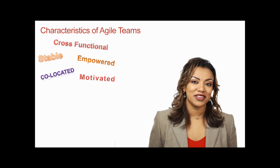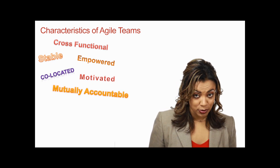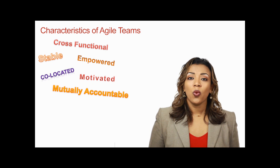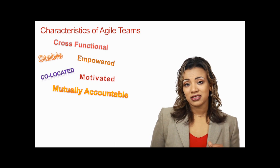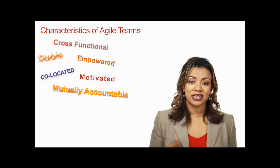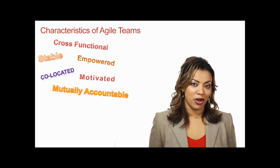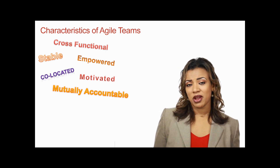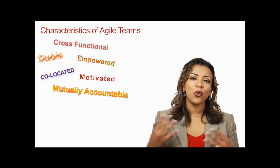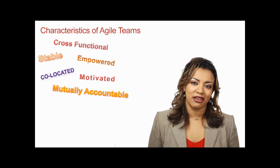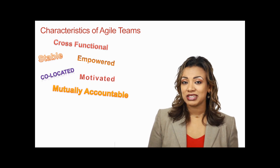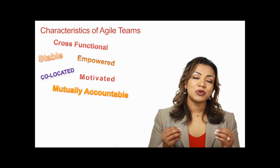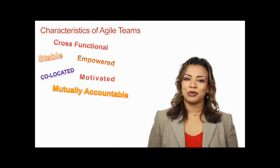Another characteristic of an Agile team is that they are mutually accountable. There's no finger pointing — no 'I didn't get the requirements clearly, that's why I didn't code it right,' or 'the developer didn't code this correctly, that's why I found all these bugs.' We are all in it together to get the story done and deliver value for the customer. That's what mutually accountable means.